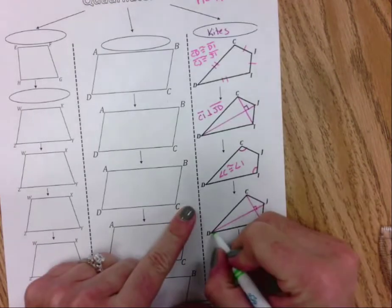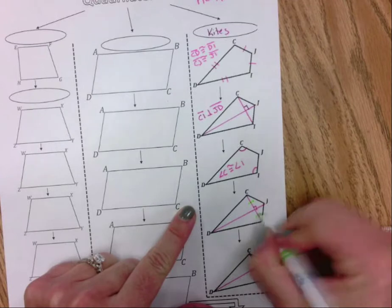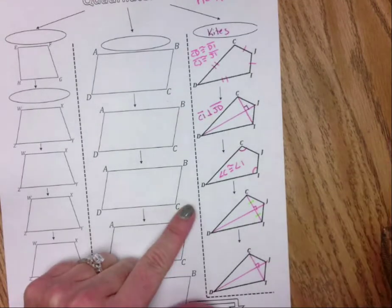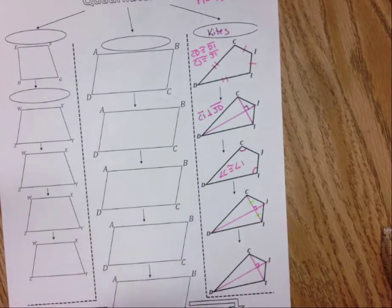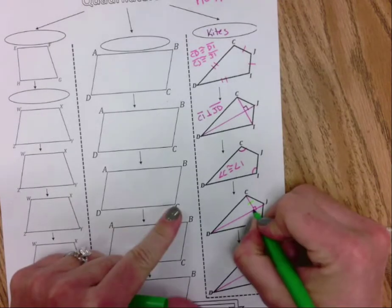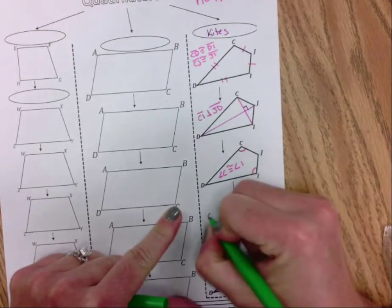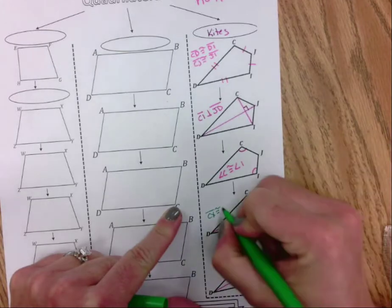The long diagonal bisects the shorter one. So I'm going to go ahead and write that up there. I'm going to put a point here. We'll call it X. So Cx is congruent to Xi.